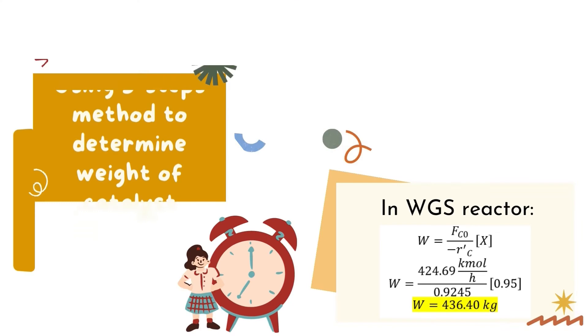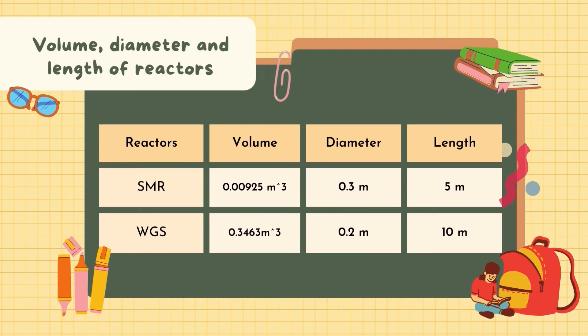After calculating the weight of catalyst, the volume of each reactor can be calculated. The volume optimum for SMR reactor is 0.00925 m³ and for WGS reactor, the volume is 0.3463 m³. The diameter and length of SMR reactor is 0.3 m and 5 m respectively. For WGS reactor, the diameter and length is 0.2 m and 10 m respectively.